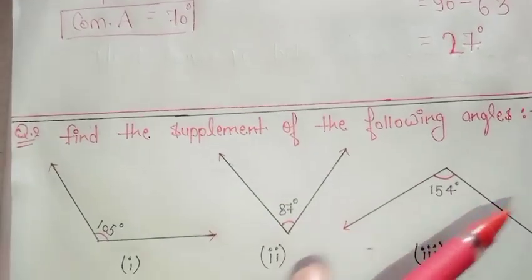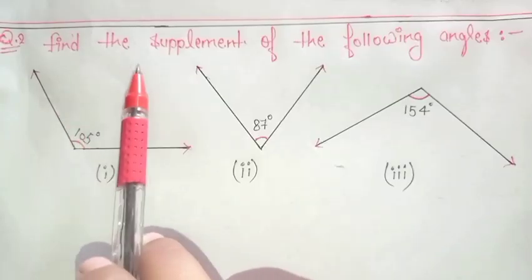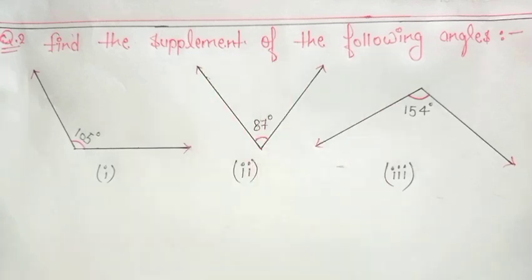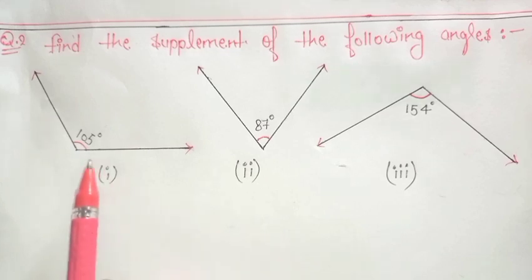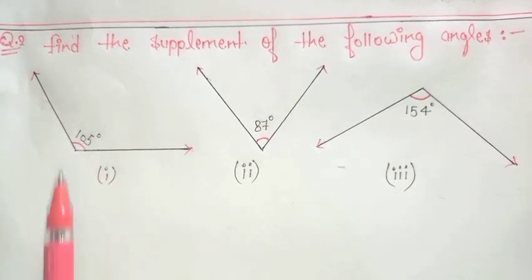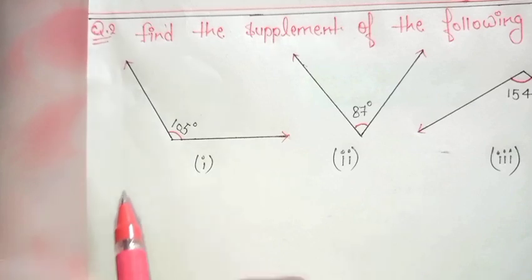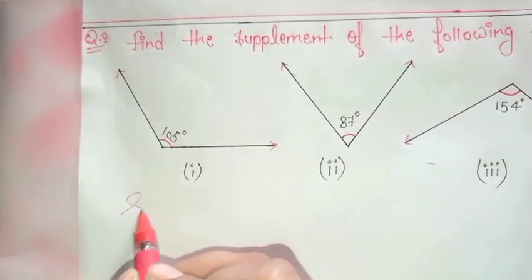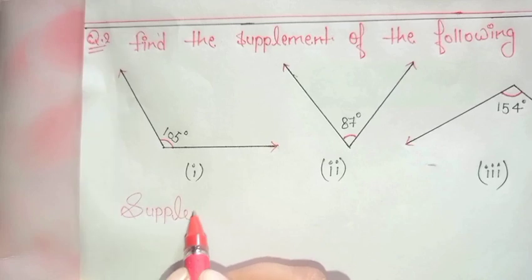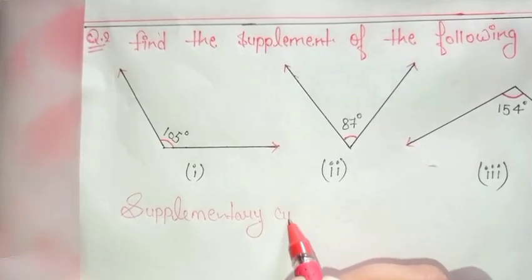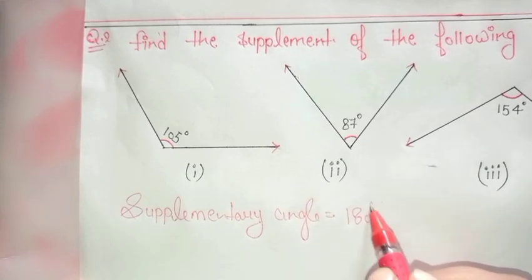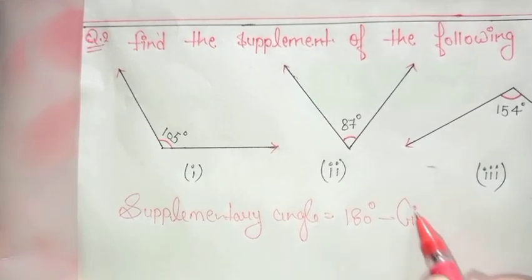Now come to question number 2: find the supplement of the following angles. What is supplementary angle? Supplementary angles are a pair of angles with the sum of 180 degrees. So here you have to find the supplement of 105 degrees. The formula for supplementary angle is: supplementary angle equals 180 degrees minus the given angle.